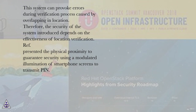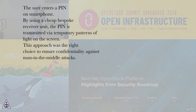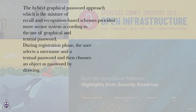A physical proximity approach was presented to guarantee security, using a modulated illumination of smartphone screens to transmit a PIN. The user enters a PIN on the smartphone, and by using a cheap bespoke receiver unit, the PIN is transmitted via temporary patterns of light on the screen. This approach was the right choice to ensure confidentiality against man-in-the-middle attacks. The hybrid graphical password approach, a mixture of recall and recognition-based schemes, provided a more secure system through the use of graphical and textual passwords.